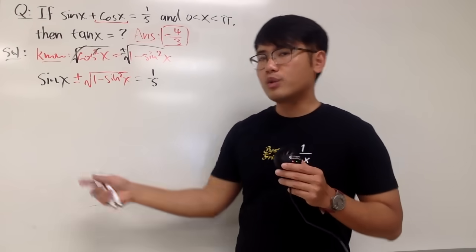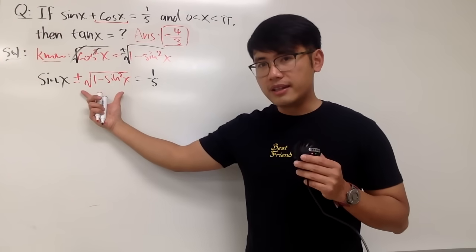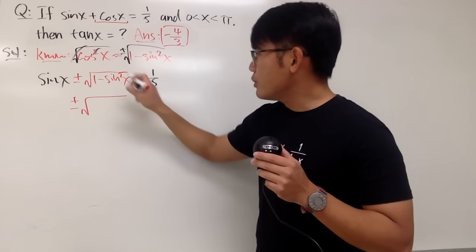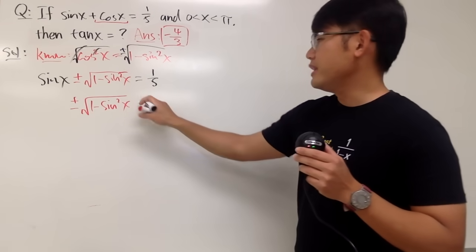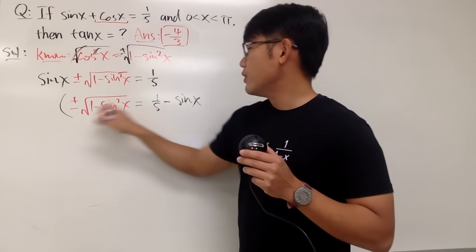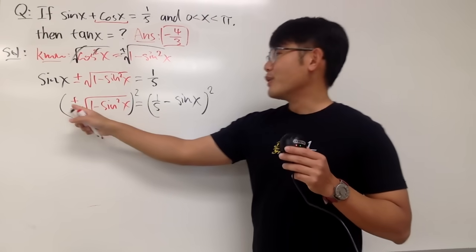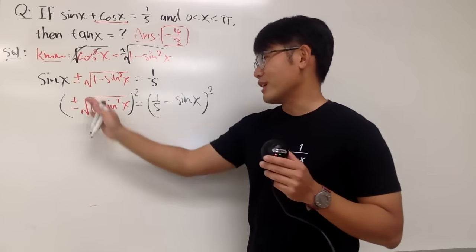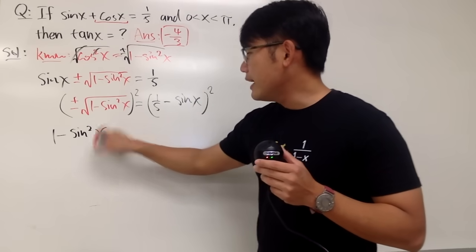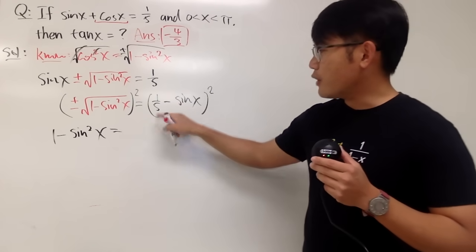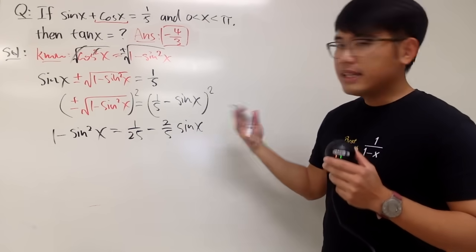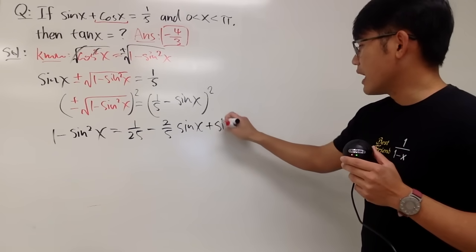This is an equation with a square root, so a good idea is to isolate the square root part and then square both sides. I'll subtract sine x from both sides, giving: plus or minus square root of 1 minus sine squared x equals 1 over 5 minus sine x. Now I'll square both sides. When you square the plus or minus, it just becomes positive 1, so that's why the plus or minus didn't matter. The square and square root cancel, leaving 1 minus sine squared x on the left. On the right, expanding: 1 over 25 minus 2 over 5 times sine x plus sine squared x.